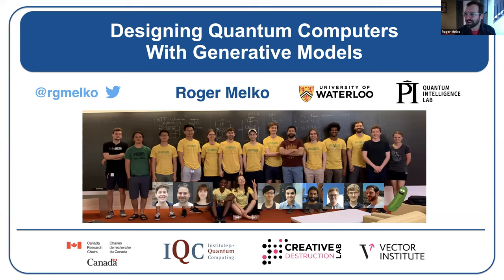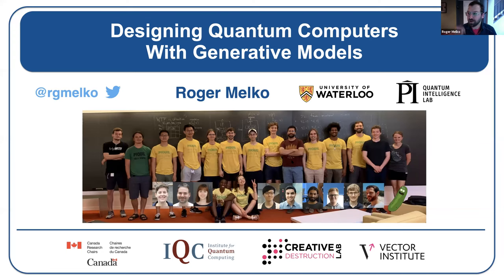I'm showing pictures of lab members at better times before the pandemic. Giacomo Torlai, who did a lot of the work I'll show on restricted Boltzmann machines, was a student of mine, went to Flatiron CCQ, and now he's joining Preskill and Fernando at AWS's quantum computing effort at Caltech. A lot of the work I'll discuss will be adopted into their larger computational strategy.